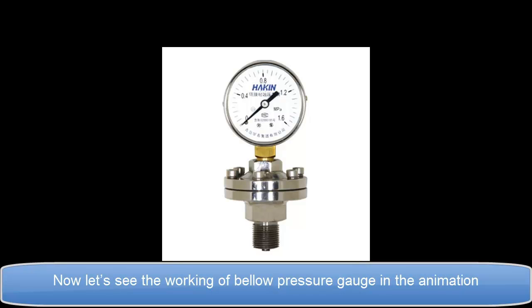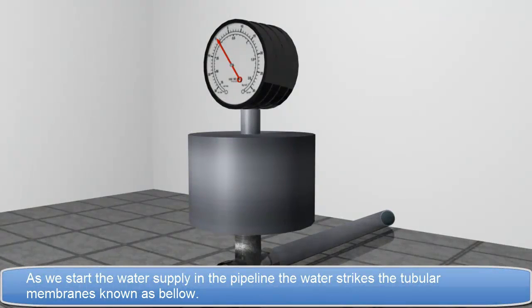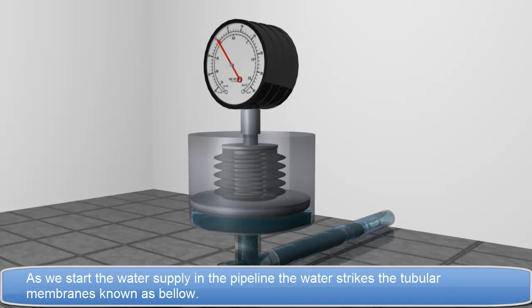Now let's see the working of Bellow Pressure Gauge in the animation. As we start the water supply in the pipeline, the water strikes the tubular membranes known as Bellow.